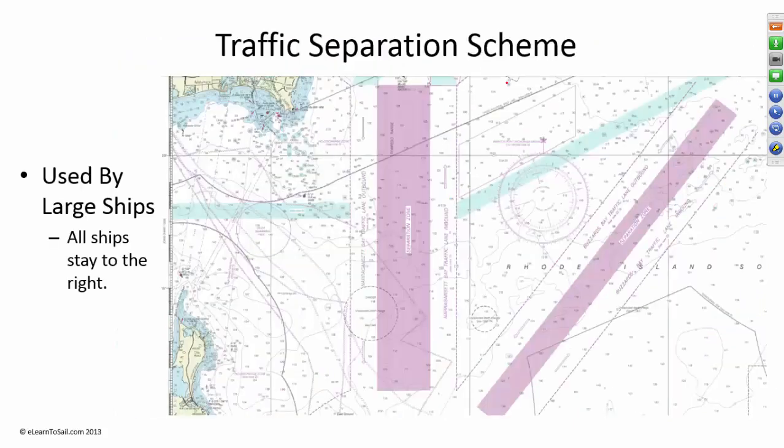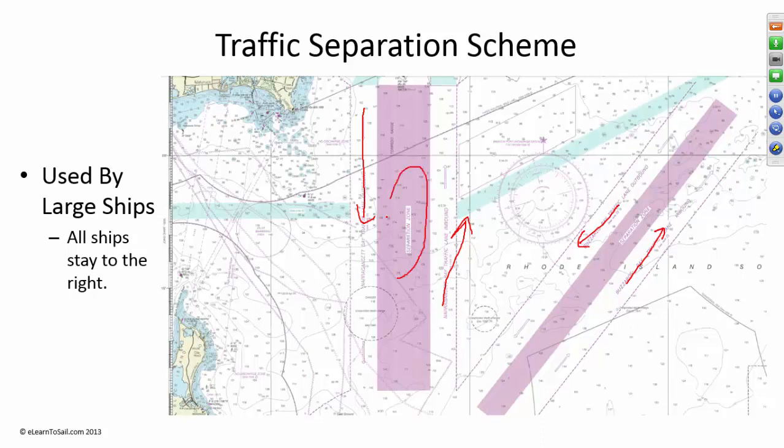Shipping lanes, traffic separation scheme. You can see right here, this is on the chart you're working with. This is the traffic separation scheme. Outbound traffic goes this way. Inbound traffic comes this way. Inbound, outbound, and this is the separation zone. So in other words, as the freighters are coming and going, they stay away from each other by this much.